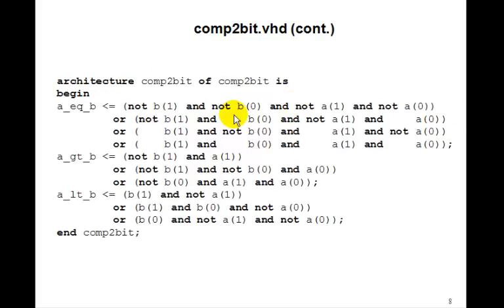Here's the architecture. We'll just write the three logic equations. Remember, for A equal B, we have to write out all the minterms: not B1 and not B0 and not A1 and not A0, and all these four minterms. A greater than B and A less than B are just the logic equations we derived from the Karnaugh maps.